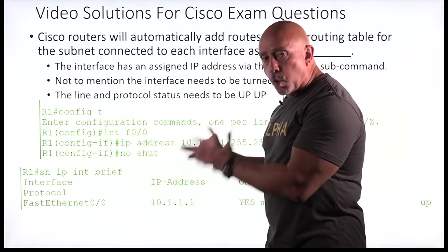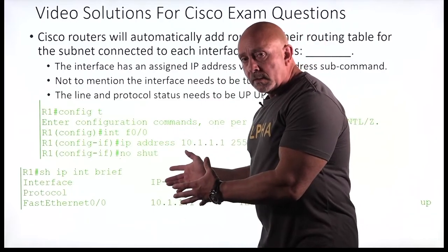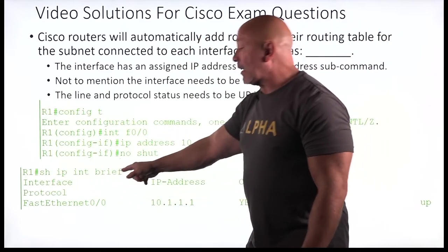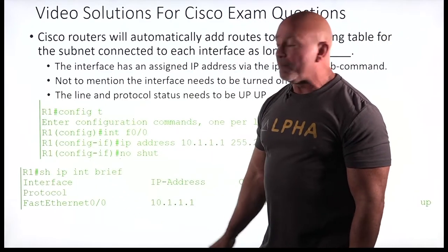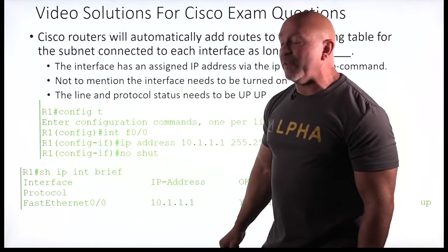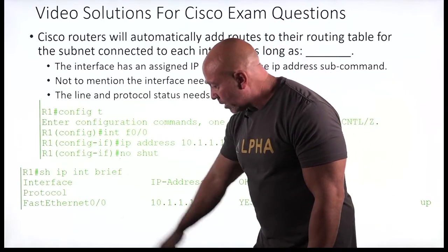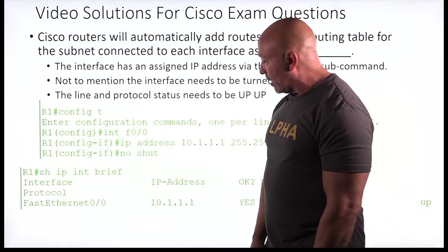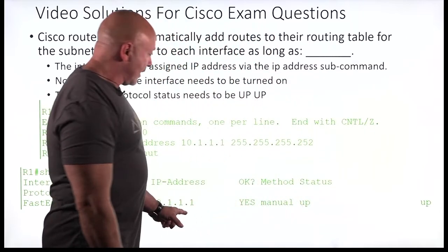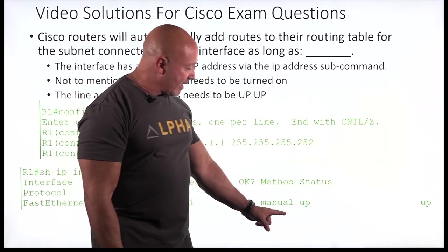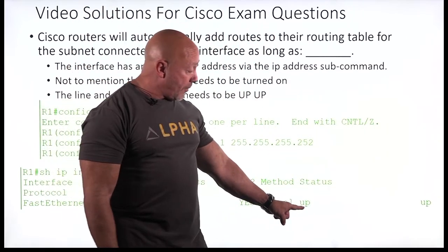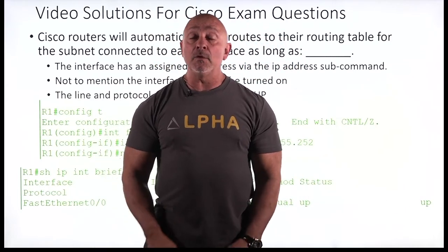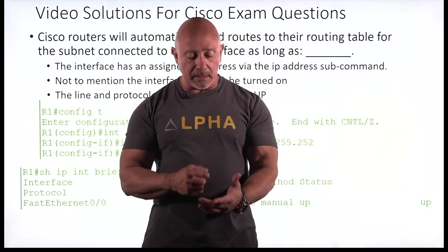To make sure the interface is up/up, we do 'show IP int brief'. That shows F0/0 — where I set that up — I can see the IP address assigned and I can see that it's up/up. That's what you want to see.